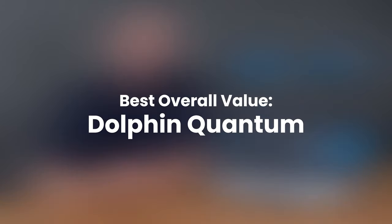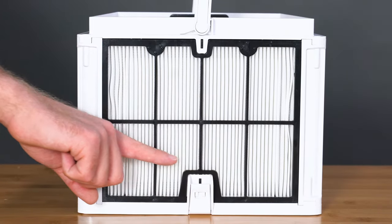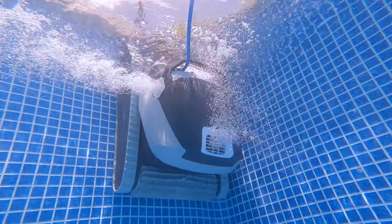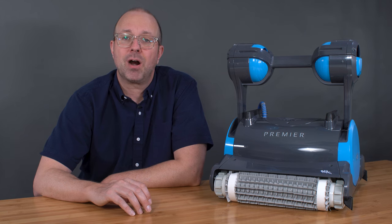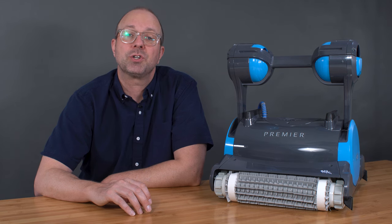Best overall value: the Dolphin Quantum. With an included oversized nanofilter basket, waterline cleaning, weekly timer, and no restocking fee, it sets the bar for what an automatic pool robot should be.